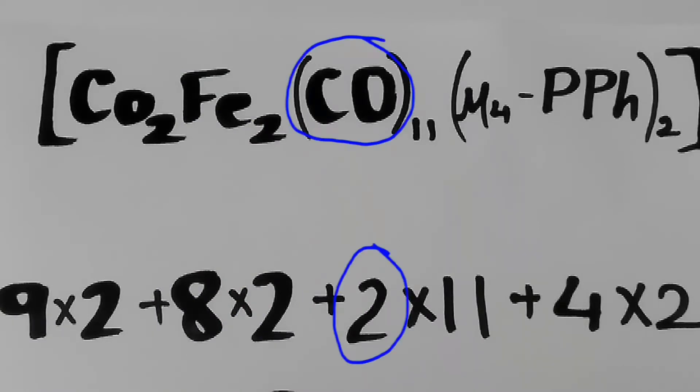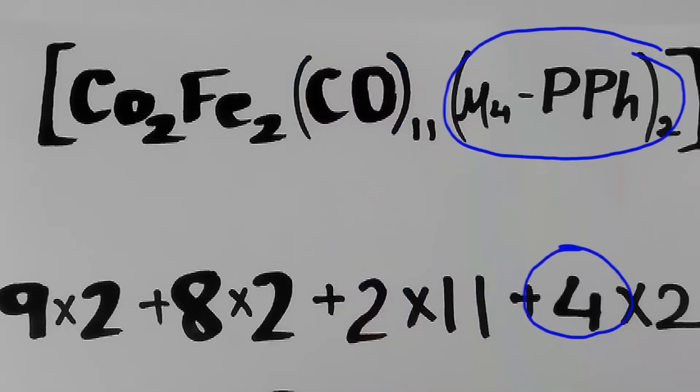Each carbonyl gives 2 valence electron, it is multiplied by 11, because we have 11 carbonyls. This complex provides 4 electron, it is multiplied by 2, because we have 2 complex.